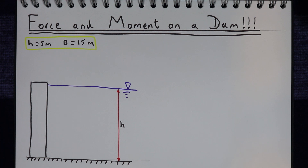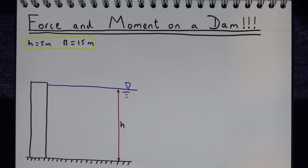In this example, what we're going to do is just look at applying the governing equations for this problem. We're not going to look at how to derive them or where they come from. We're just going to assume the governing equations and look at how to apply them to solve this problem.